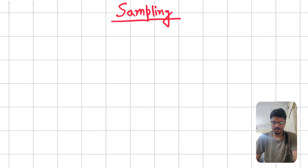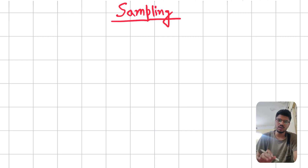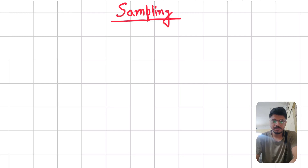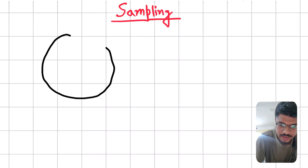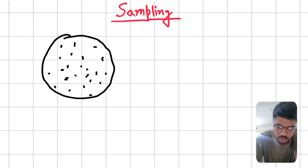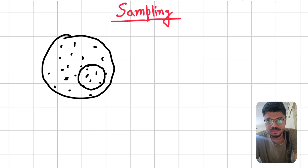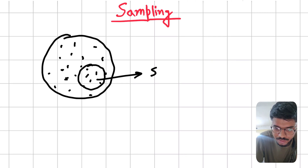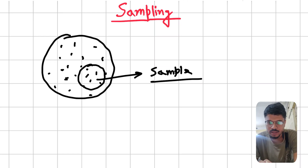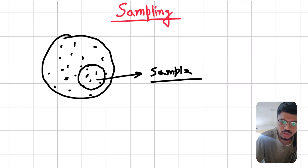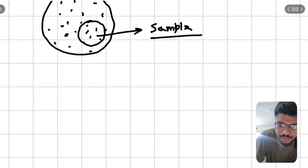In this video we are going to learn about sampling. Sampling means suppose there is a large population — these are the units. You take a small part of the population, and that is called a sample. A sample is a small part of the large population that exactly replicates the large population. Sampling is mainly of two types.